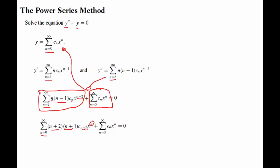Now that the summations are in sync, we can combine. So this will become summation from n=0 to infinity of (n+2)(n+1)c_(n+2) plus c_n, all times x^n equals 0.